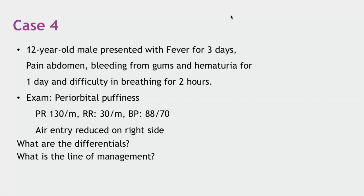Regarding inotrope choice for multifactorial shock: you can start with dopamine. If the dengue patient is not responding to adequate fluid therapy, dopamine is recommended. If the patient has a septic-type shock not responding to dopamine, add norepinephrine. If there is cardiogenic shock due to dengue myocarditis, dobutamine should be added adjunct to dopamine as a co-infusion. For intubation, general indications apply — nothing specific to dengue.